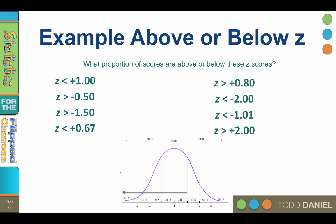So what proportion of the scores are below z equals positive 1.00? It's 0.8413. This is the example that we did just a moment ago, so go back and review that if you still have any questions.